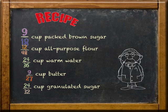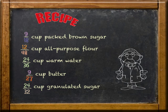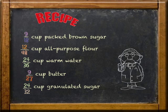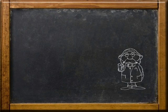We've got 9/18 cup packed brown sugar, 12/48 cup all-purpose flour, 24/36 cup warm water, 9/27 cup butter, 24/32 cup granulated sugar. We're going to have to use division to create new equivalent fractions that are a little more familiar.